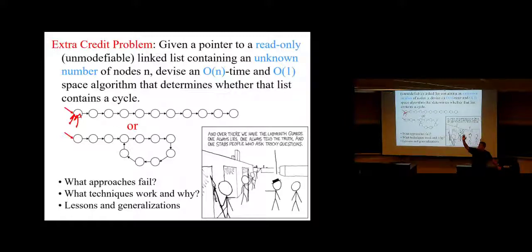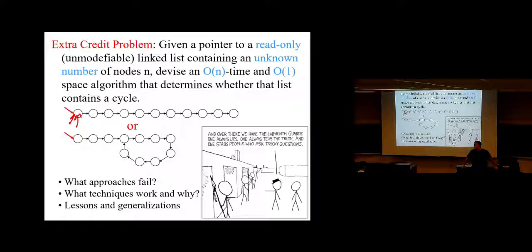When you solve a problem, or when you see the solution — especially if you didn't solve it — ask yourself: why didn't I see it? It's not because you're not intelligent. There are subtle mental blocks and assumptions your brain puts on itself that prevent you from seeing something that later becomes very obvious. It's true all over life, not just in algorithms. Ask yourself why it wasn't obvious at the time, and what you can do better to make future things more obvious.